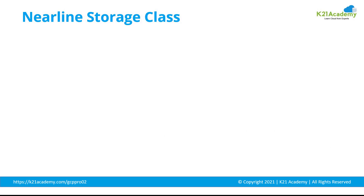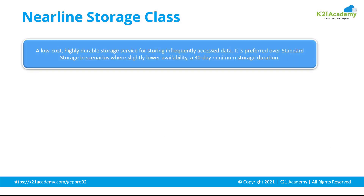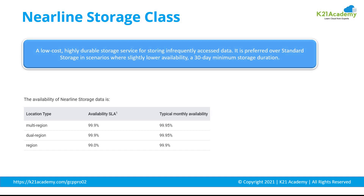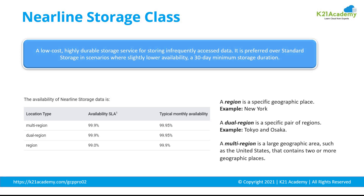Now let's talk about near-line storage class. Near-line storage is a low-cost, highly durable storage service for storing infrequently accessed data. It is ideal for data that you plan to read or modify on average once per month or less. For example, if you want to continuously add files to cloud storage and plan to access those files once a month for analysis purposes, then near-line storage is a great fit. It is also appropriate for data backup, long-term multimedia content, and data archiving.